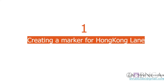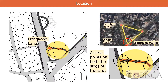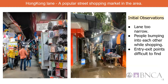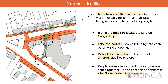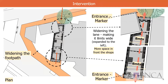Moving on with design interventions, the first one is creating a marker for Hong Kong Lane. Hong Kong Lane is one of the most famous shopping centers in our zone. The observations were: the lane being too narrow, people bumping into each other while shopping, and entry and exit points being difficult to find. Youngsters are the most frequent visitors in this area. The problems identified were that the entrance of the lane is lost, it's difficult to locate on Google Maps, and in this period of social distancing, it is nearly impossible to travel through the space. Thus, the design intervention is to create an entrance marker and widen the footpath to create more circulation space in front of the shops.